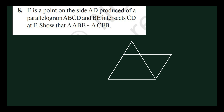E is a point on the side AD produced of parallelogram ABCD. When you produce AB up to E, BE intersects CD at point F. We have to show that triangle ABE is congruent with triangle CFB.